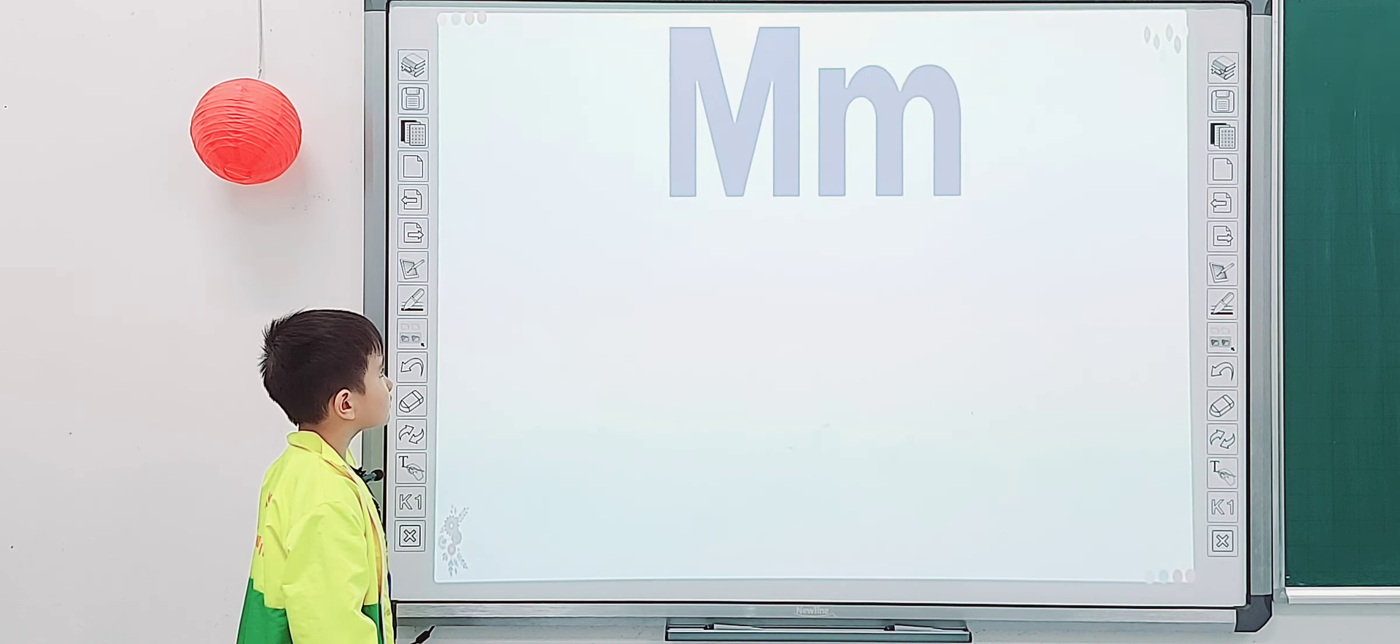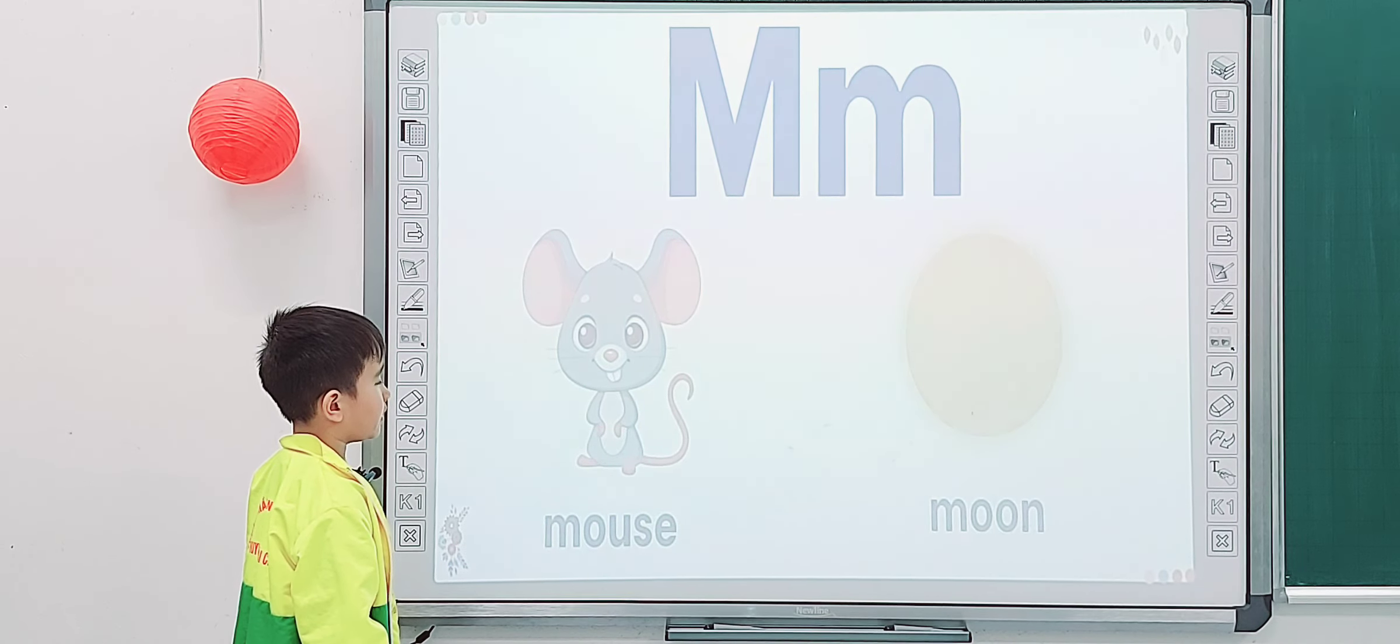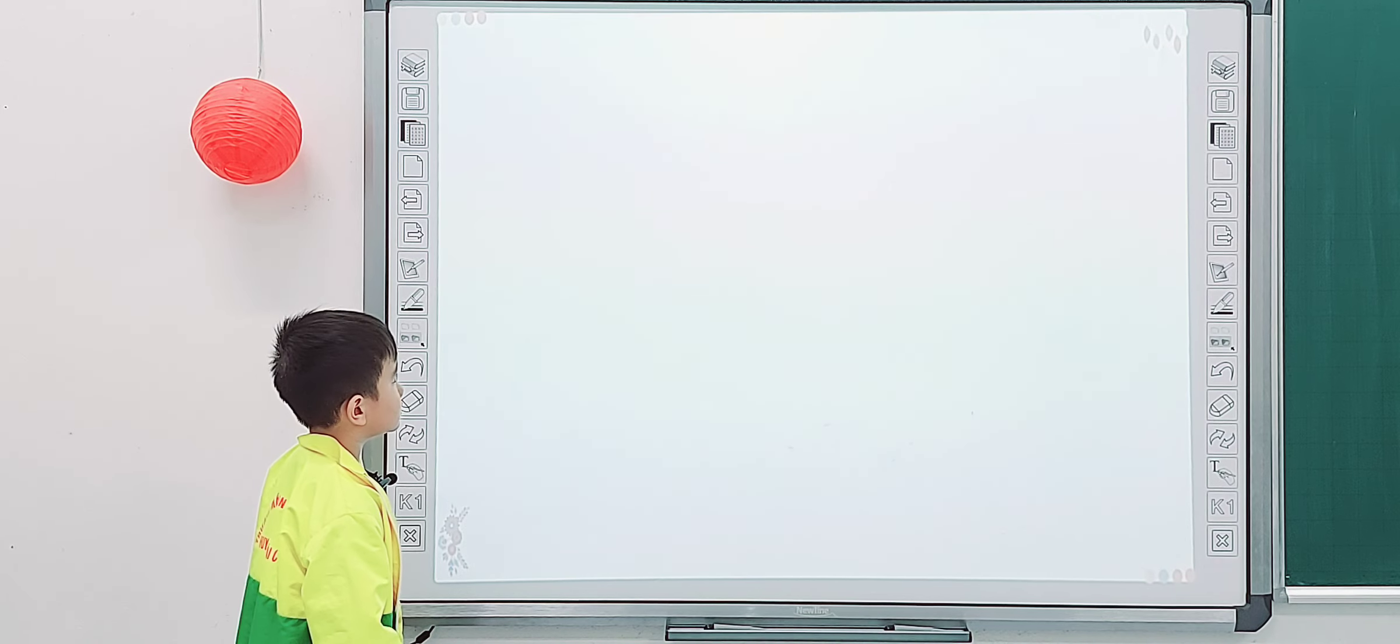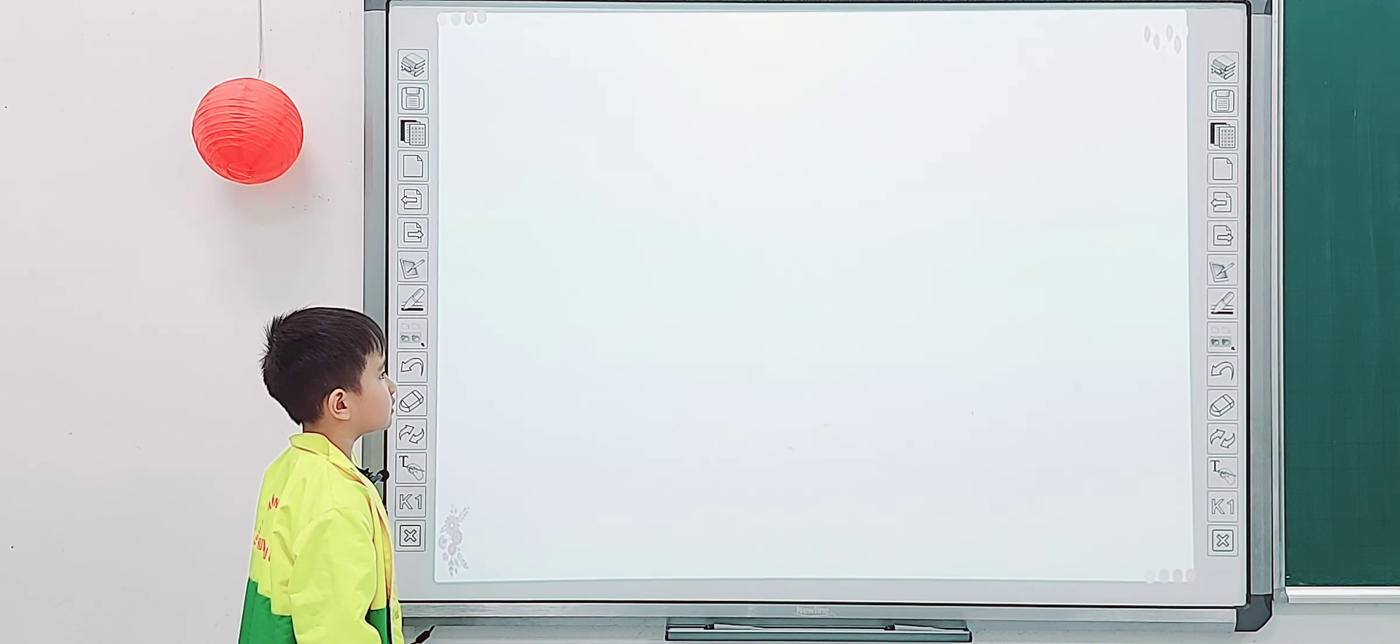Part two, letters. Tell me what is it? M. Moon. Good job. And N. Number. Good job, next. O. Onion. Octopus.